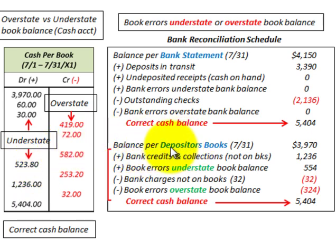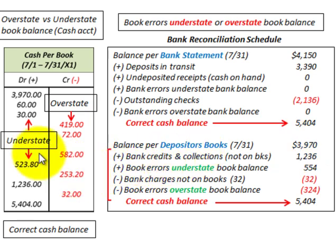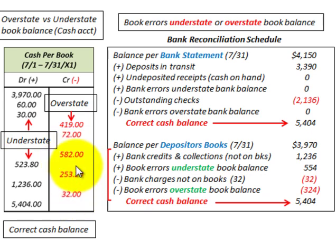Referring back to the bank reconciliation schedule: bank credits and collections not on the books are added to the beginning balance — a debit or increase to cash. Book errors that understate the book balance are also added and debited. Bank charges not on the books are subtracted — a credit to cash. Book errors that overstate the book balance are also subtracted — a credit to cash. So errors understating the balance get a debit; errors overstating get a credit.